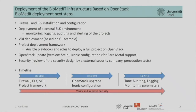The timeline: until Q2 we plan to finish the firewall, ELK, VDI, and project framework — this is almost done. This summer, we will upgrade OpenStack to the latest version and configure Ironic, the bare-metal service. For Q3, we want to tune the auditing, logging, and monitoring parameters. And of course, during the whole process we have to be increasingly aware of security — something we should never keep out of mind, because it's very important, and unfortunately for sysadmins it's not always the first priority.